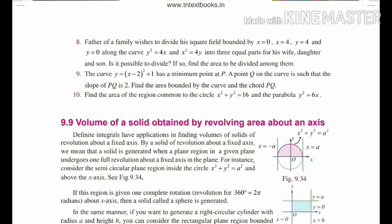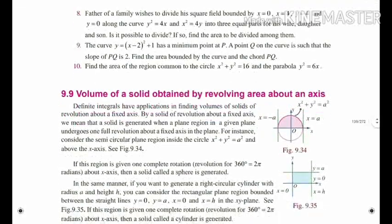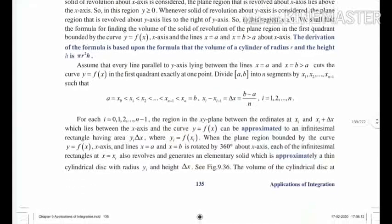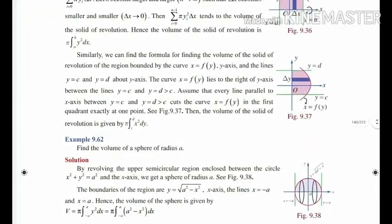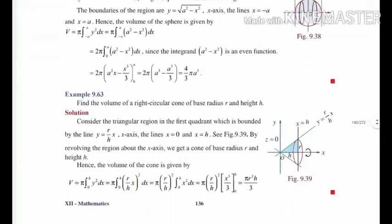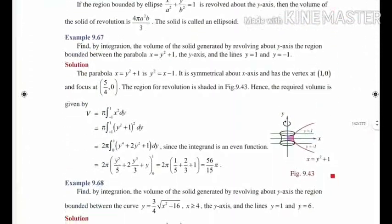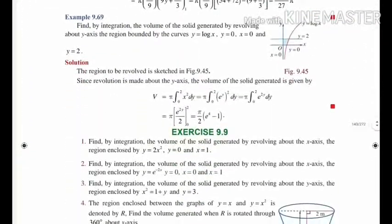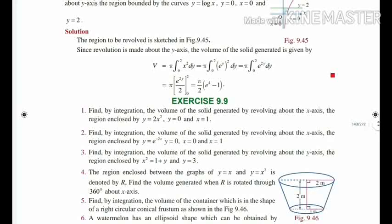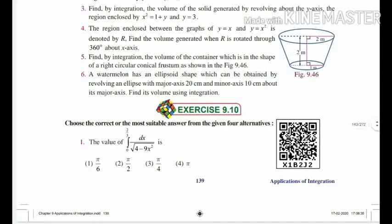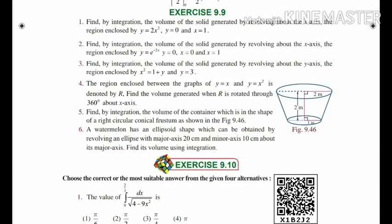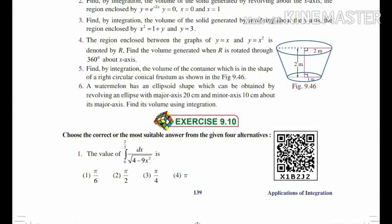The next section — Volume of Solid Obtained by Revolving Area Above an Axis — all problems in this section are deleted. Example 9.62 and examples 9.63, 9.64, 9.65, 9.66, 9.67 are deleted. Examples 9.68 and 9.69 are also deleted. Exercise 9.9 is fully deleted. Exercise 9.10 contains multiple choice questions — you have to prepare for that fully. You have to study all the properties without proof.